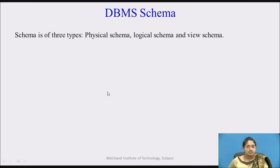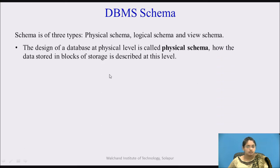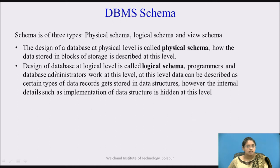The schema is of three types: physical schema, logical schema, and view schema. The design of the database at the physical level is called a physical schema. How the data is stored in the blocks of storage is described at this level. The design of the database at the logical level is called a logical schema. The programmers and the database administrators work at this level.